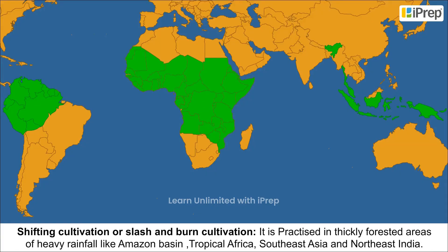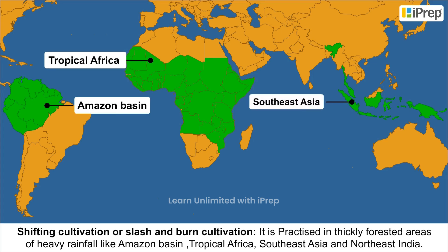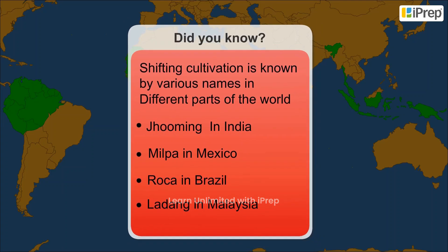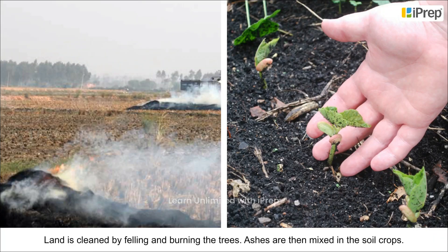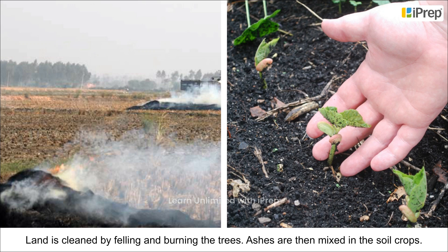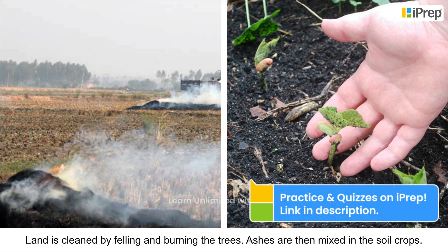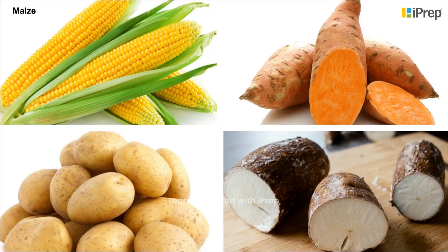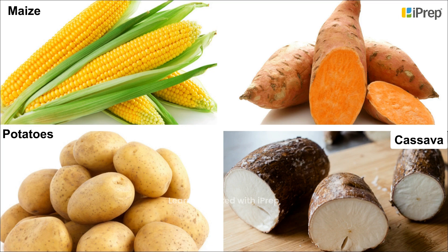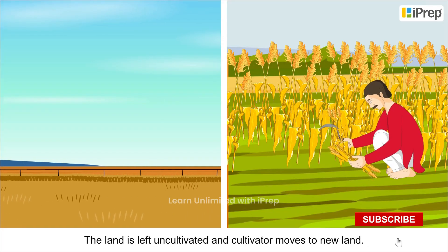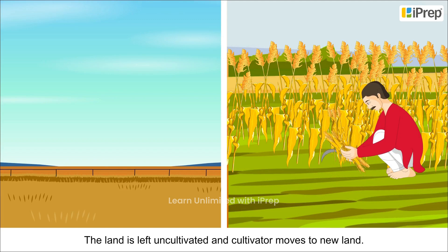Shifting cultivation, or slash and burn cultivation, is practised in thickly forested areas of heavy rainfall like the Amazon Basin, Tropical Africa, Southeast Asia and Northeast India. Land is cleared by felling and burning the trees. Ashes are then mixed into the soil. Maize, yam, potatoes and cassava are grown. After the soil loses its fertility, the land is left uncultivated and the cultivator moves to new land.